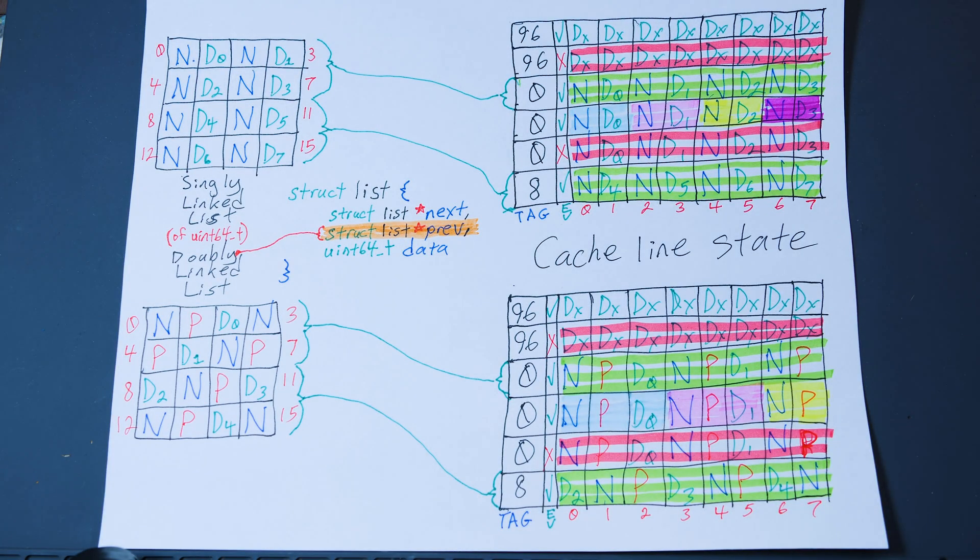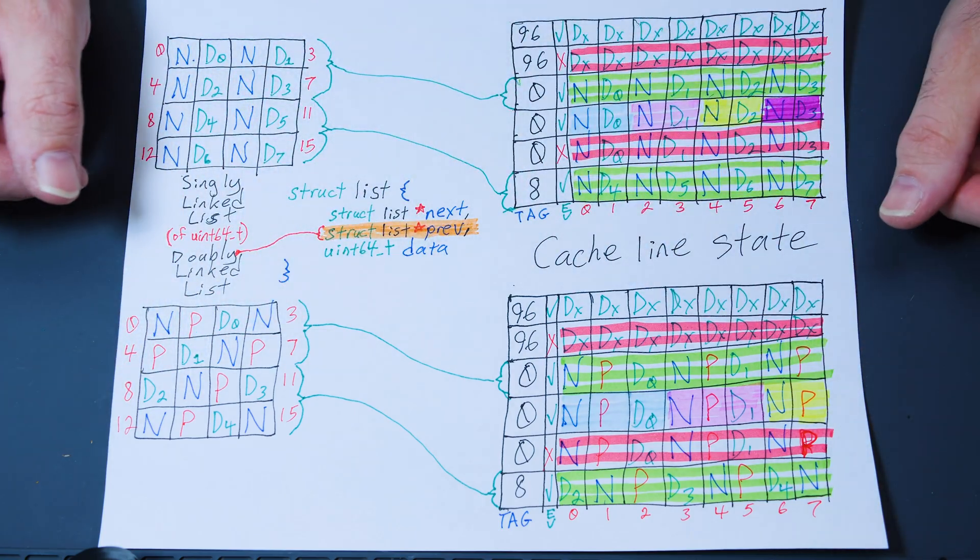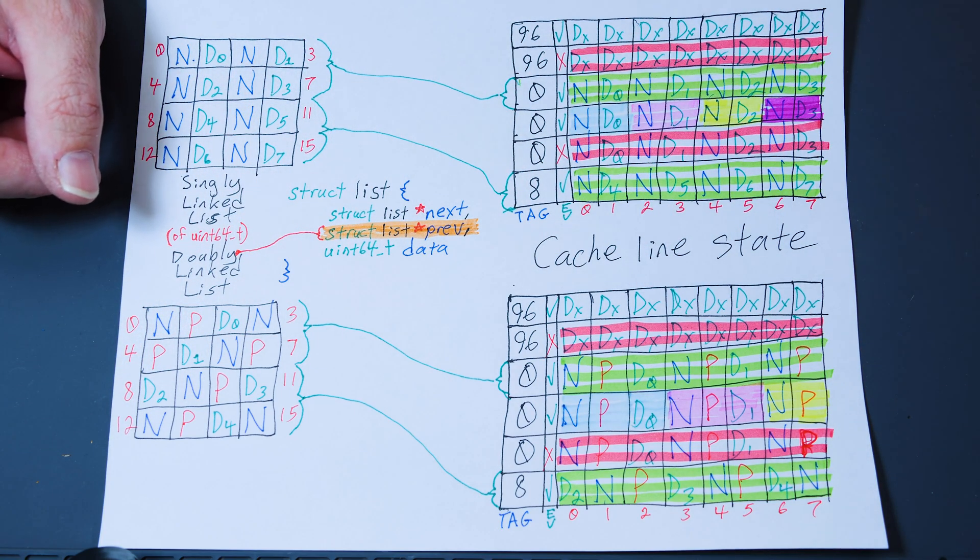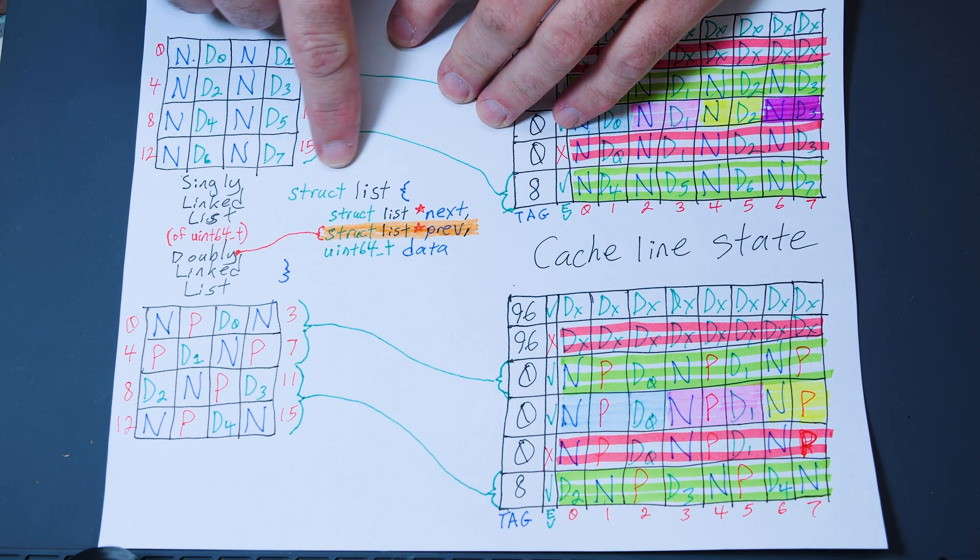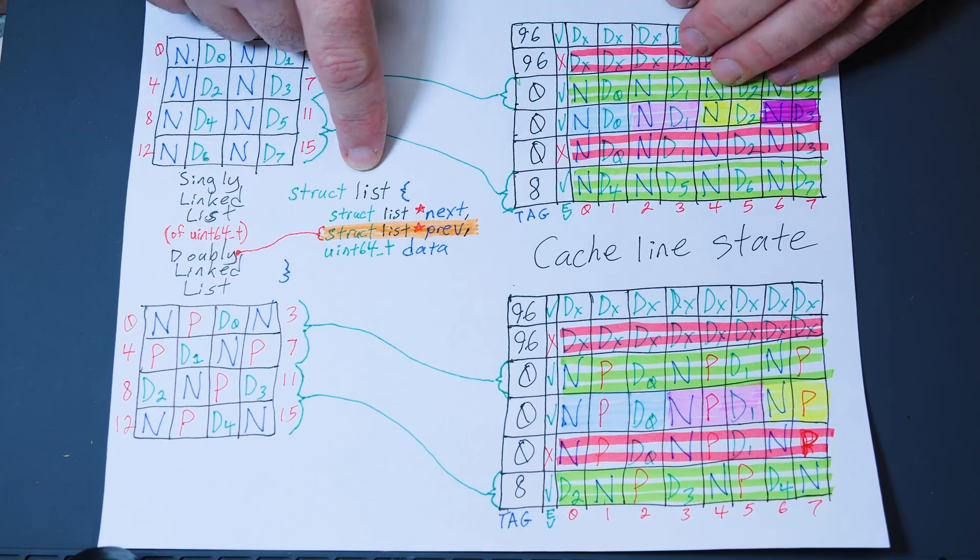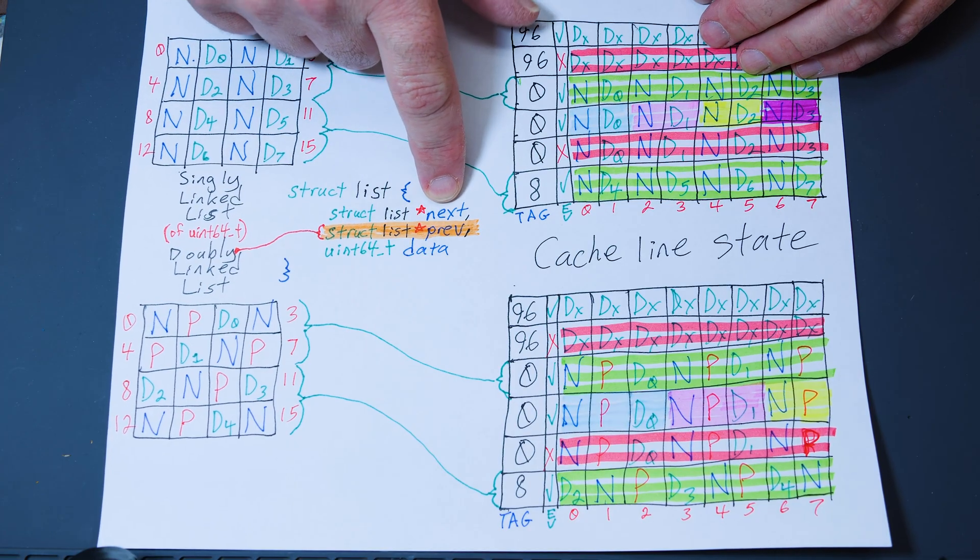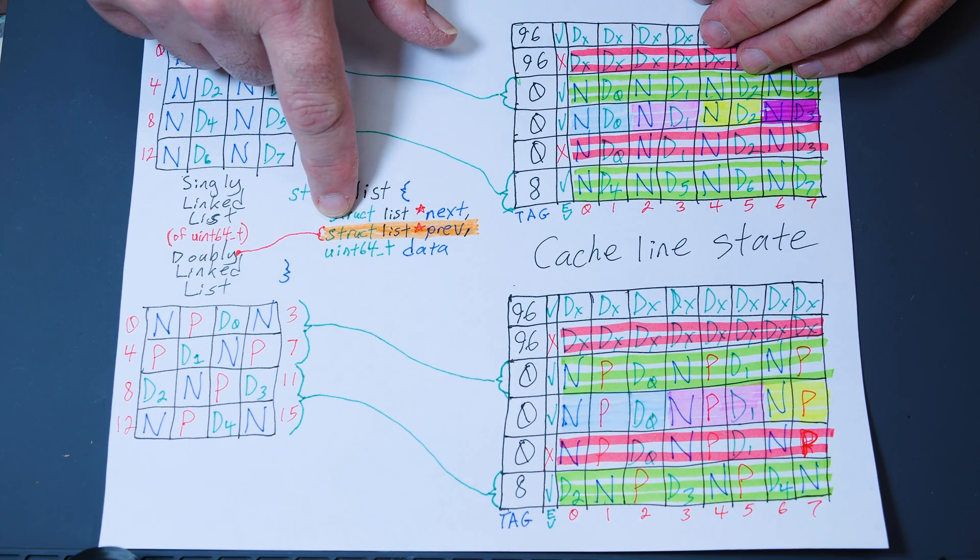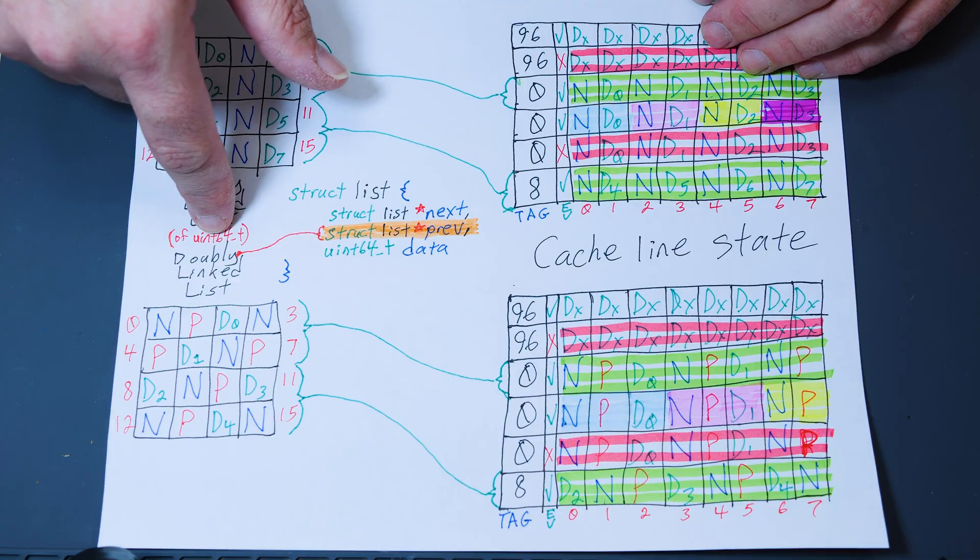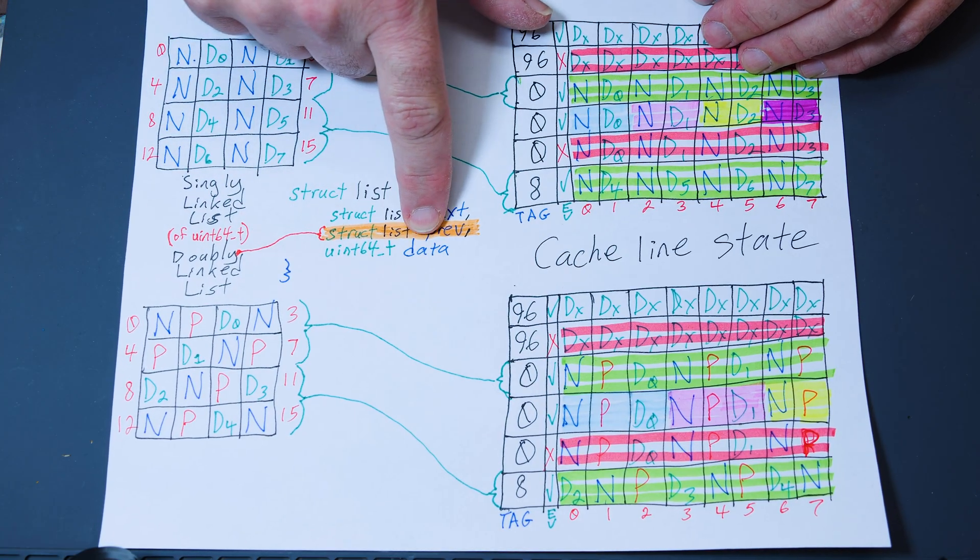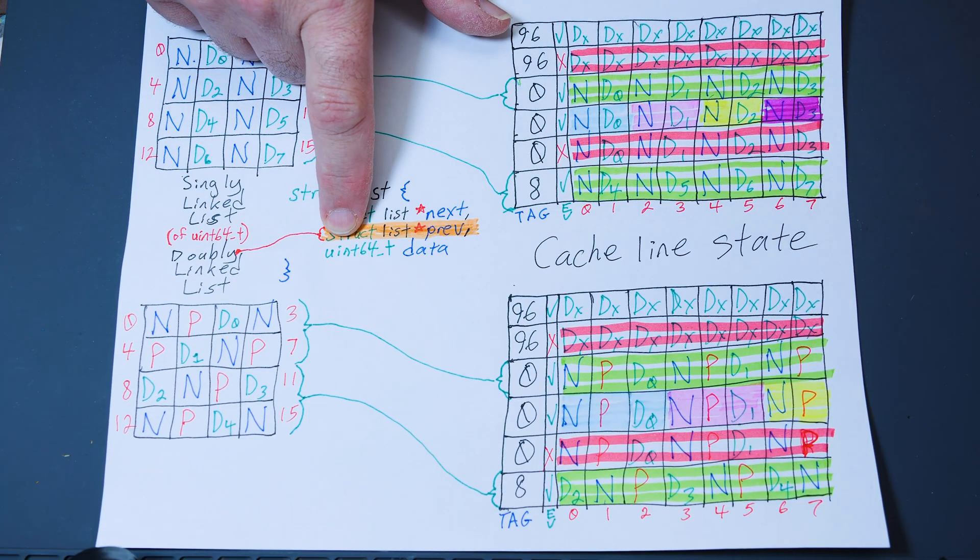As promised, my friends, this is the explanation of how cache lines work and how the caches affect your program. So here in C format, we have a structure. We'll just call it list. And you see we have a pointer to the next item in the list, a pointer to the previous item in the list that only applies to a doubly linked list. And the data in the structure is an unsigned 64-bit integer.